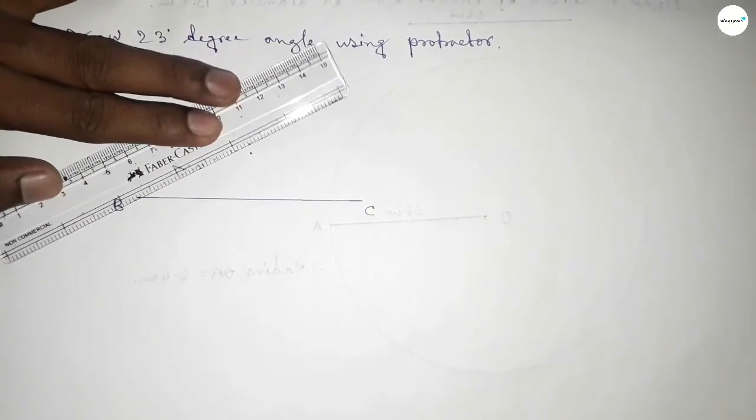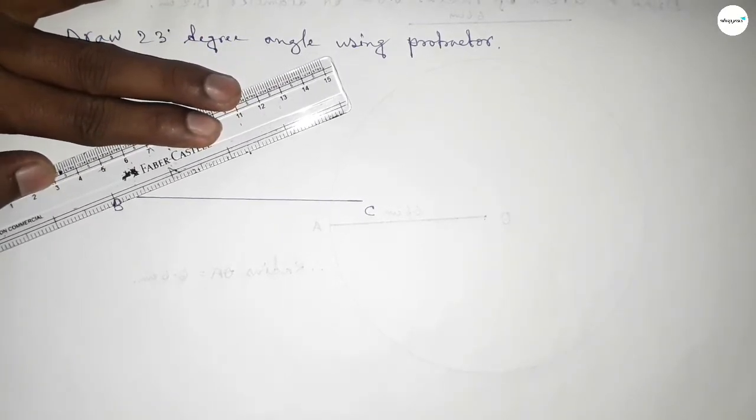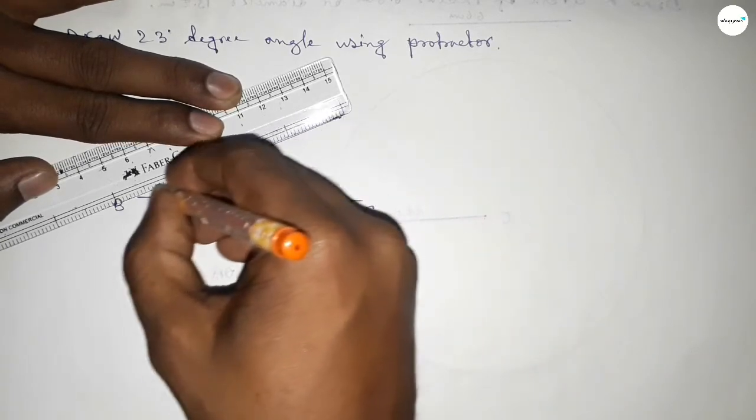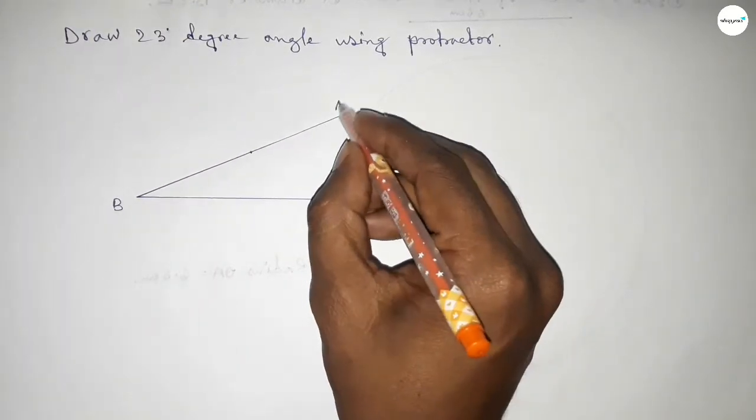Now joining this side to get 23-degree angle, so by joining this side, and taking here A point.